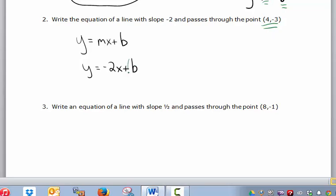So because b is a fixed value, then any point the line passes through, in this case, negative 3 equals negative 2, that's the slope, times x, which is 4, plus b.